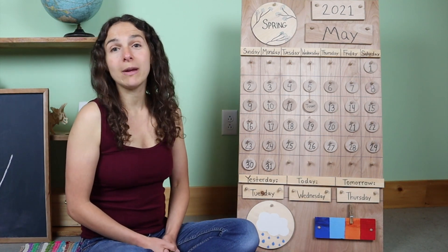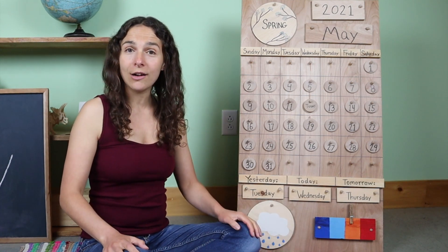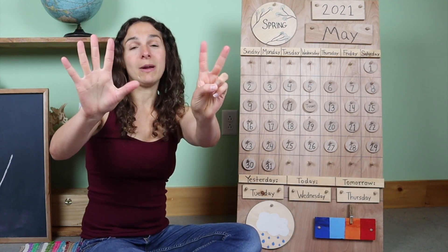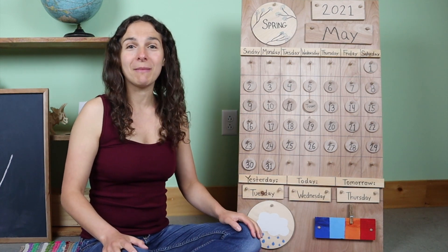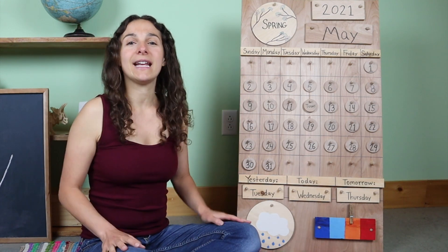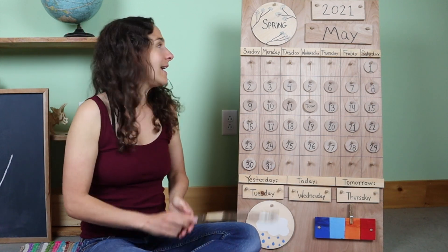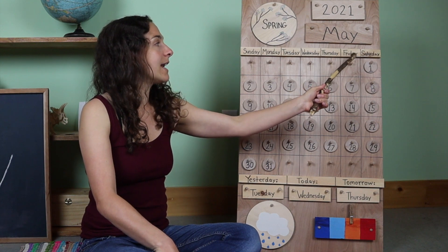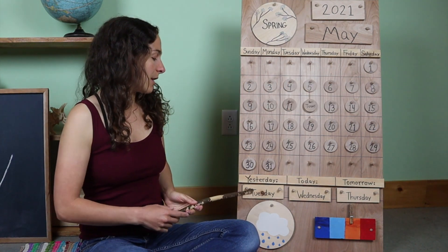Now it's time to sing the days of the week song. Can you show me how many fingers we should hold up for the next song? Seven! Because we have seven days in our week, we hold up seven fingers. If you know the words, you can sing along with me. There are seven days, there are seven days, there are seven days in a week. Sunday, Monday, Tuesday, Wednesday, Thursday, Friday, Saturday.